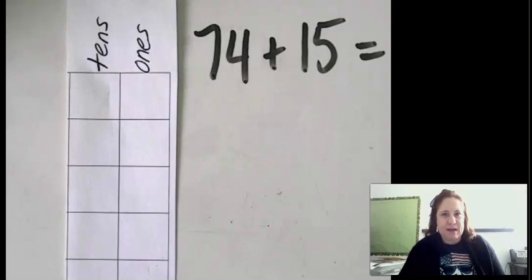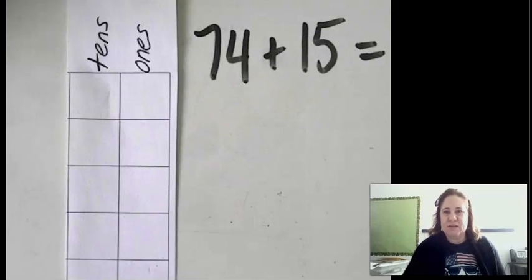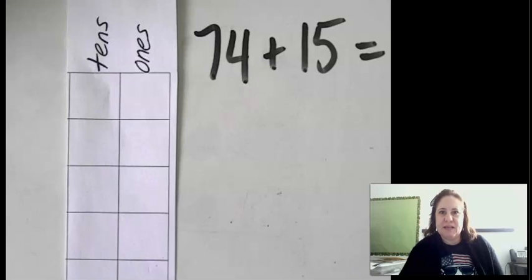Okay, so today we're going to practice adding multiple digit numbers. So those are numbers with more than one digit. And today's example we're going to start with is 74 plus 15.